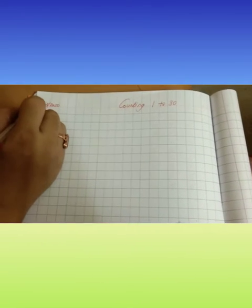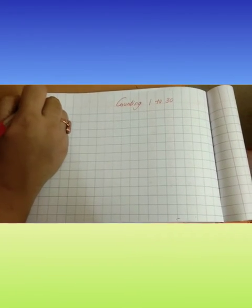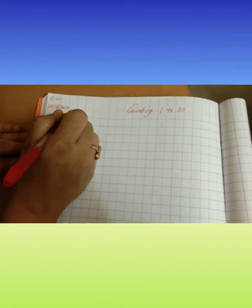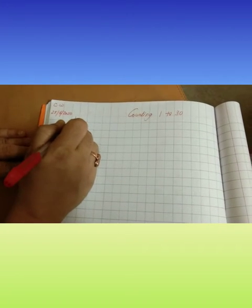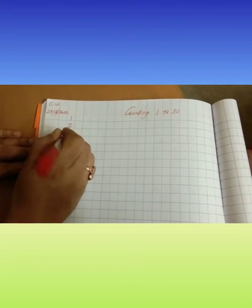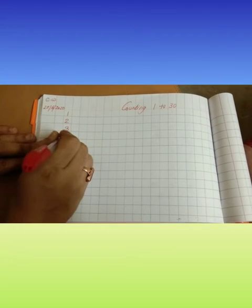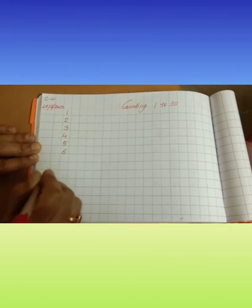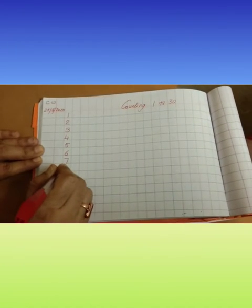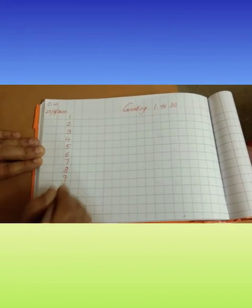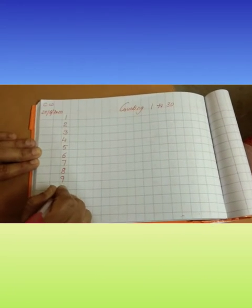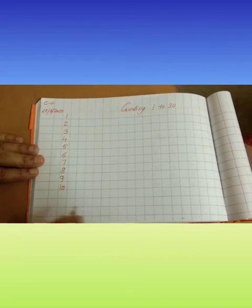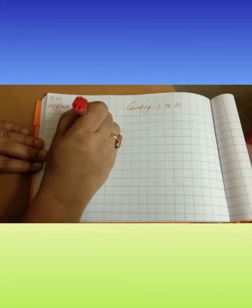First of all put date. Then class word CW. Then write 1, 2, 3, 4, 5, 6, 7, 8, 9, 1, 0, 10.